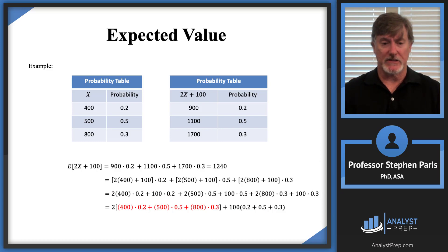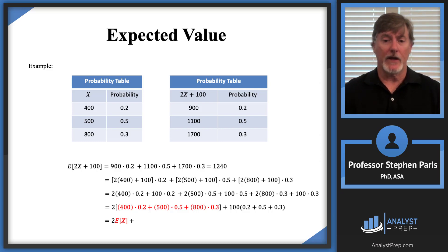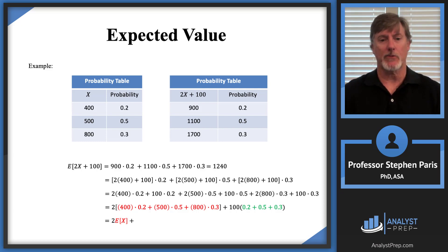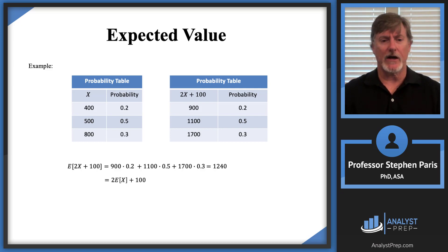Looking at the green terms, every term has a 100, so we factor out 100, getting 100 times the quantity 0.2 plus 0.5 plus 0.3. The expression inside the factor of 2 is exactly the expected value of X, which is 570. The probabilities 0.2 plus 0.5 plus 0.3 add up to 1, so the second term is just plus 100. Therefore, E[2X + 100] = 2·E[X] + 100.